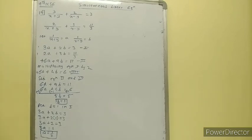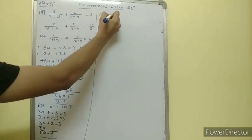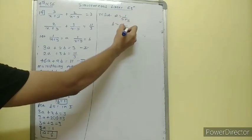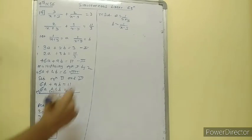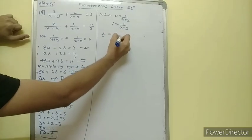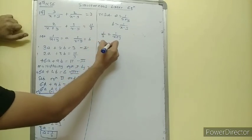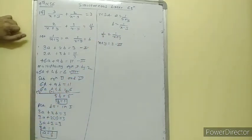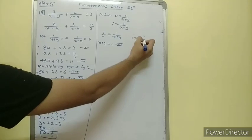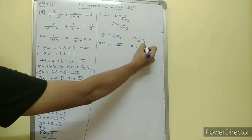We have the value of a as 1 upon 3. But we are not asked to find out the value of a or b, so we will resubstitute. Resubstituting: a is equal to 1 upon x plus y and b is equal to 1 upon x minus y. What is the value of a? It is 1 upon 3. So 1 upon 3 is equal to 1 upon x plus y; reciprocating, x plus y is equal to 3. That is the third equation.